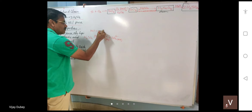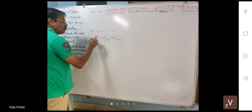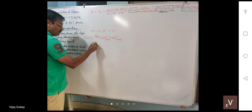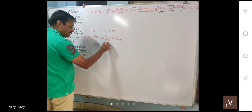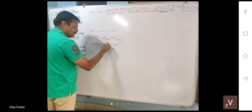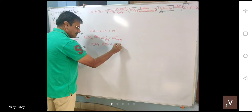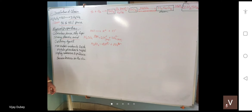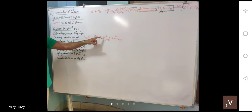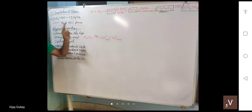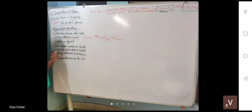Sulfuric acid can neutralize two base molecules, which is why it is called a dibasic acid. It can neutralize two base molecules. The number of hydrogen ions provided by an acid is what we call the basicity of that acid.